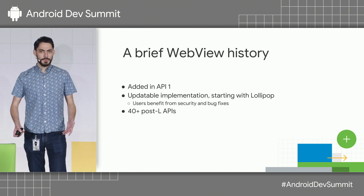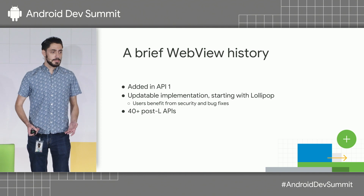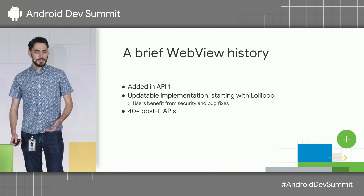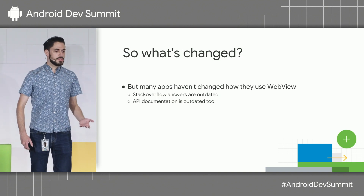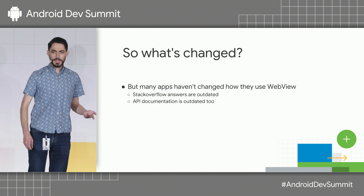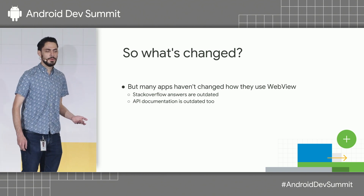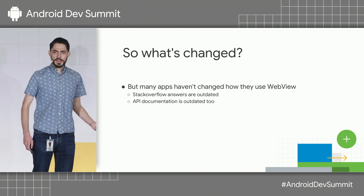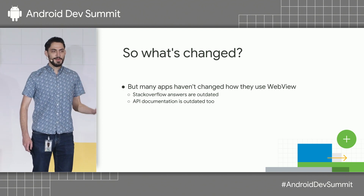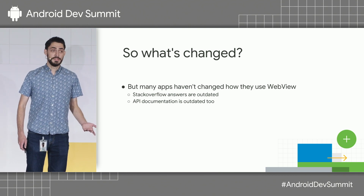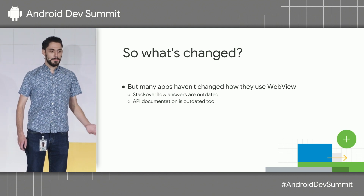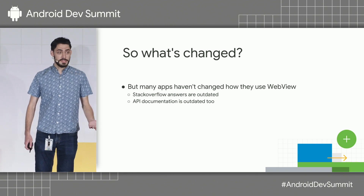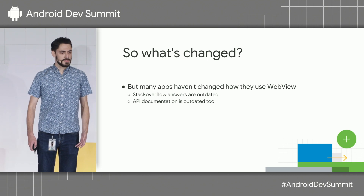A lot has changed since then. We've added 40 new APIs just to make it easier to work with WebView. But when we look out at the ecosystem, apps are kind of using WebView the same way they've always used it. When you look at Stack Overflow, the answers are outdated at best — certainly not best practices, and oftentimes just wrong. Some of the blame is on our shoulders too; our API docs are written like it's still API level one.